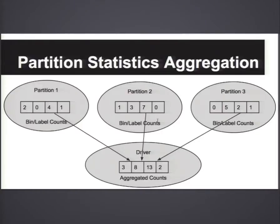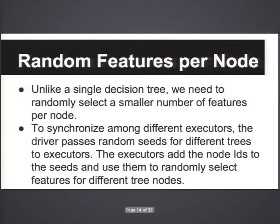In partition one, you do a count of different labels — this is what you need for classification. If you want to do regression, you compute the sum, square sum, and so forth. Then in the driver, you just merge the statistics, which is a simple sum.